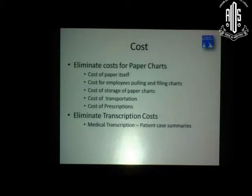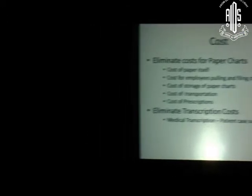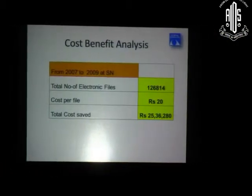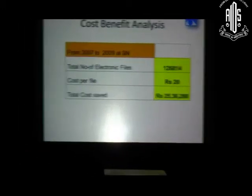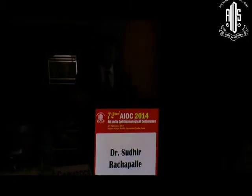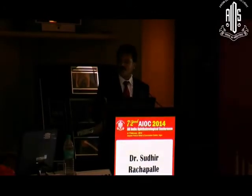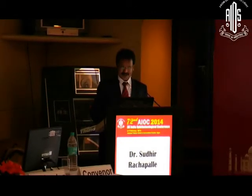Cost savings come from paper, pulling records, reducing employees in the medical records department, transportation of files between centers, prescription costs, and medical transcription — patient case summaries no longer need dictation and typing. In a cost-benefit example: each paper file costs about 20 rupees. Within two years, we generated almost 1,20,000 files — saving almost 25 lakhs instantaneously.